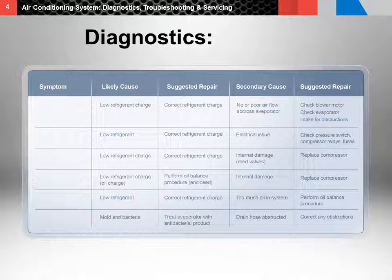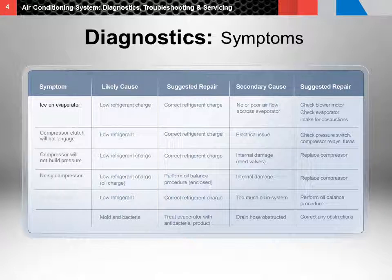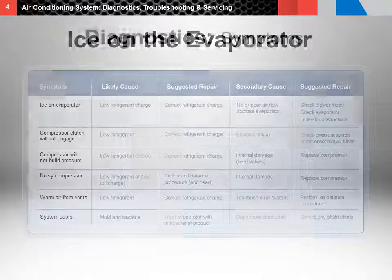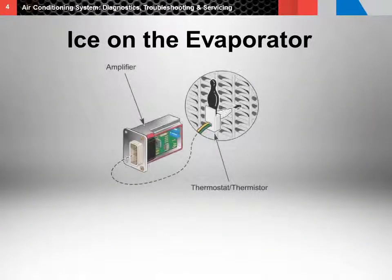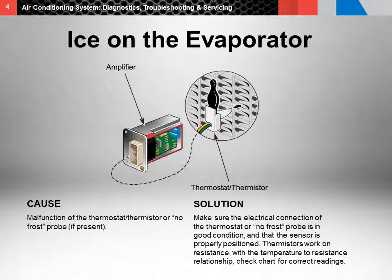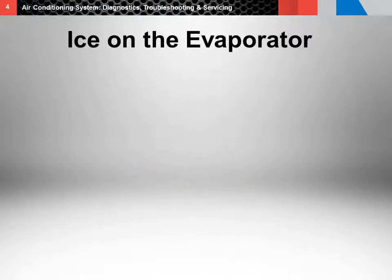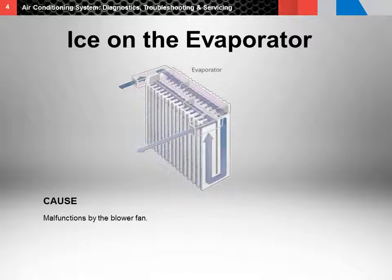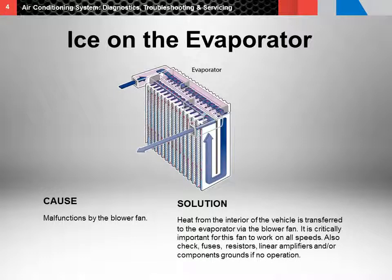Another diagnostic tactic for air conditioning systems is to check symptoms. Some common symptoms include ice on the evaporator core, compressor issues, warm air from vents, and system odors. First, let's look at how ice on the evaporator core can cause air conditioning system problems. One cause can be the malfunctioning of the thermostat or no-frost probe if present. Make sure the electrical connection of the thermostat or no-frost probe is in working condition and that the sensor is in the proper position. Replace any defective parts as needed. Malfunctions by the blower fan can also cause ice on the evaporator core. Check to make sure that with the air conditioning system running, at least the first ventilation speed works. If not, make sure the electrical system is properly connected.